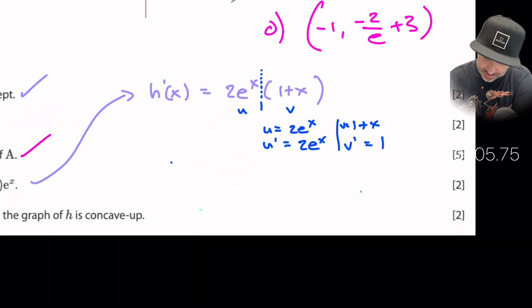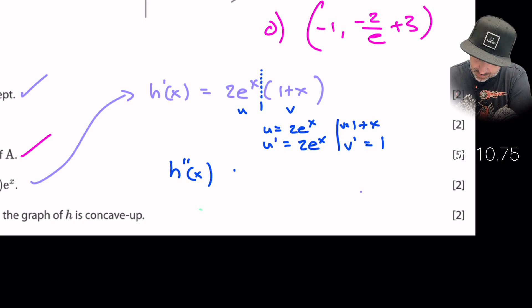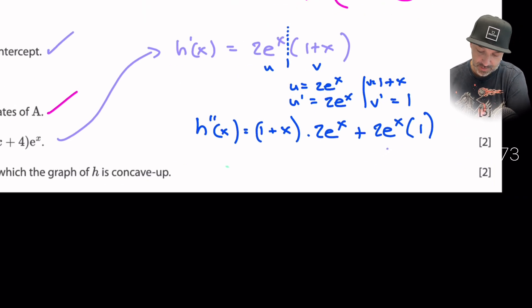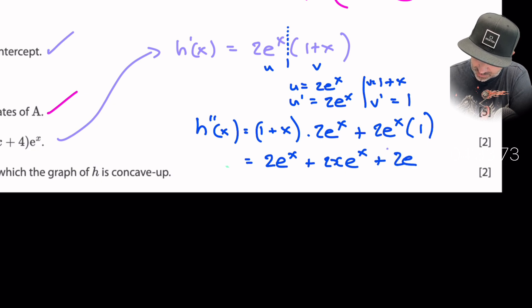So let's go ahead and put all of that into the product rule again. Right so it's v du so v is (1 + x) times the derivative of u which is 2e^x plus u which is 2e^x times the derivative of v which is just one. Now it tells us what we've got to make it look like. So it might just be a little bit easy if I just times everything out right now. So I've got 2e^x + 2xe^x + 2e^x and we can see that two of the terms are like terms so that's where the four comes in.